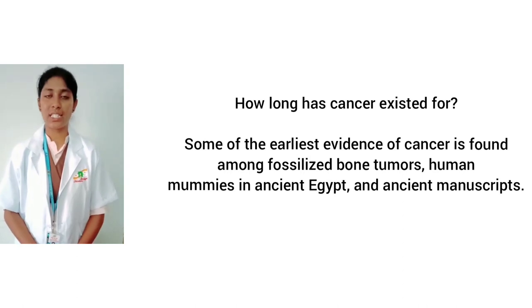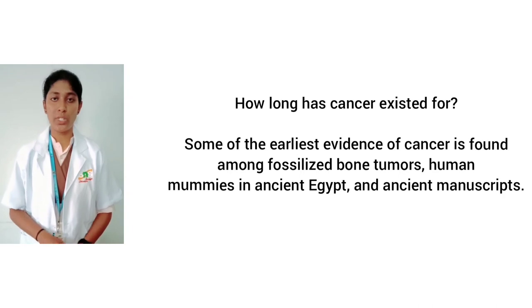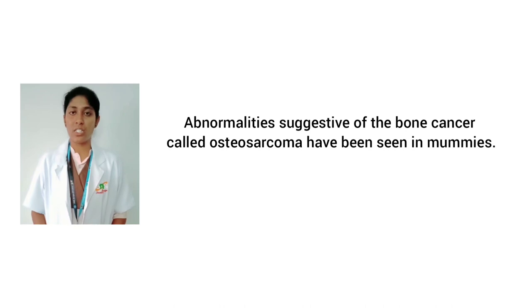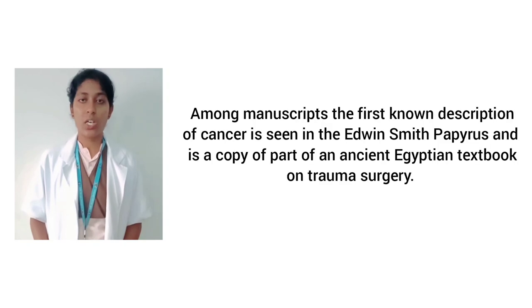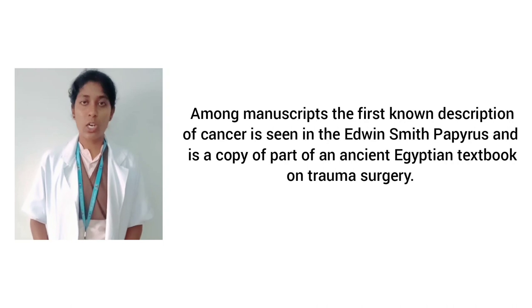How long has cancer existed for? Some of the earliest evidence of cancer is found among fossilized bone tumors, human mummies in ancient Egypt and ancient manuscripts. Signs suggestive of bone cancer called osteosarcoma have been seen in mummies. Among manuscripts, the first known description of cancer is seen in the Edwin Smith Papyrus, which is a copy of part of an ancient Egyptian textbook on trauma surgery.